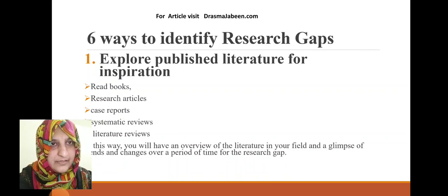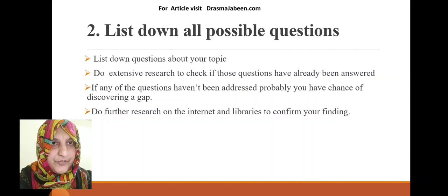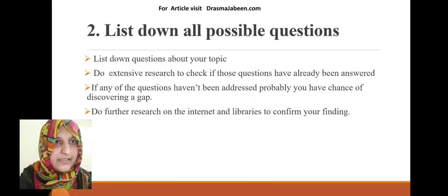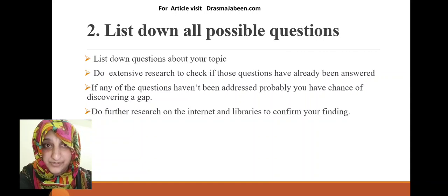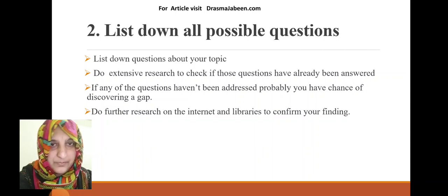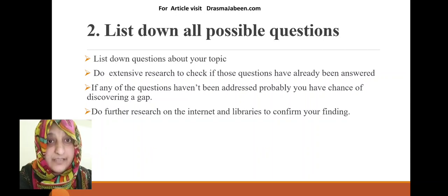That was exploration of published literature. The second approach is that you should list down all the possible questions which are coming into your mind about the relevant topic and do extensive research individually on these research questions to determine whether these research questions have been answered or not. If any one of these questions has not been addressed, there is a chance that you have found a research gap.